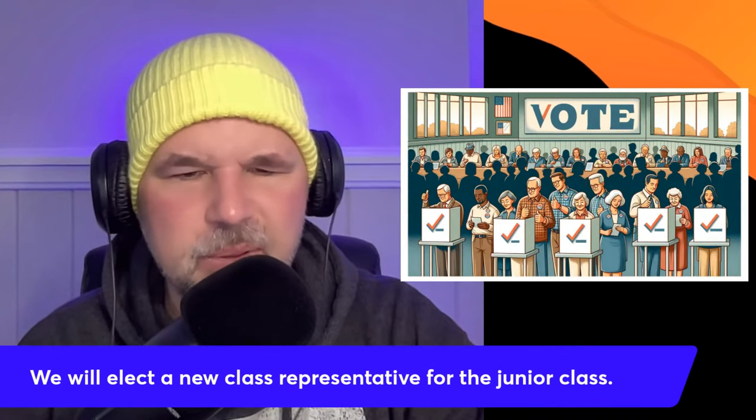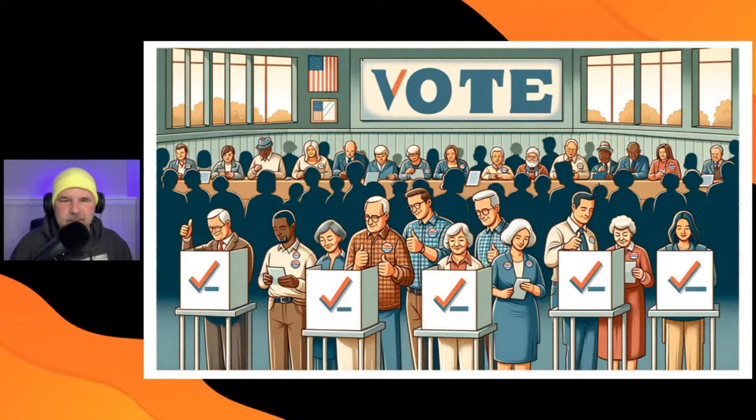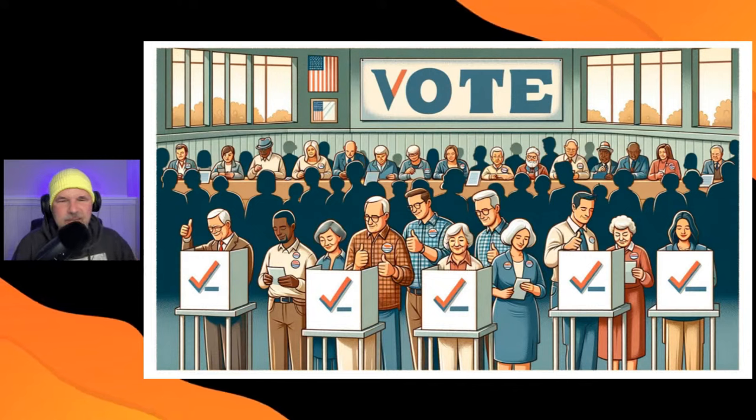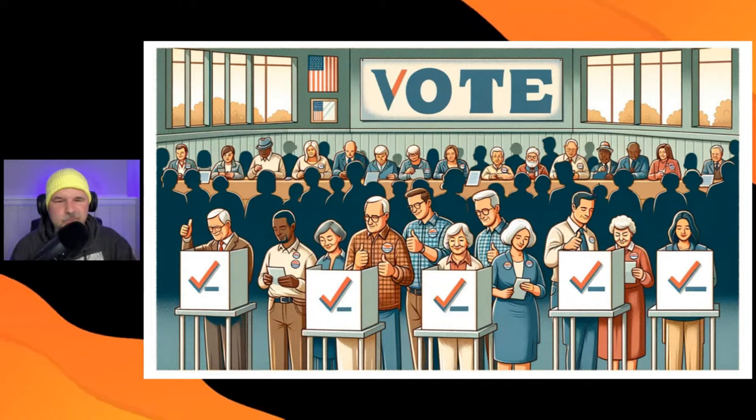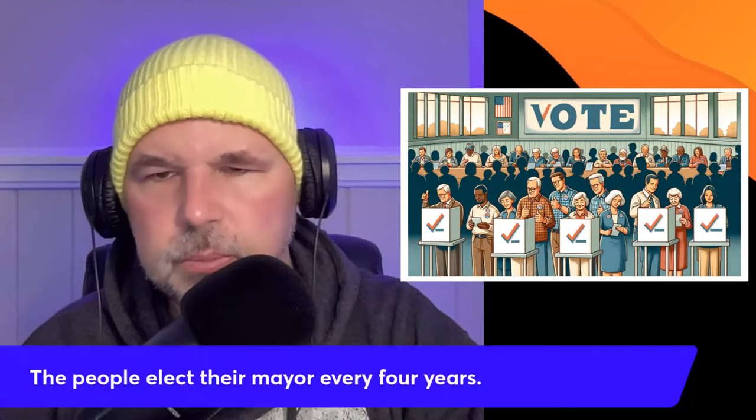Here's another picture of people voting — casting their vote. If you saw the English lesson I did on fishing, you'll know there's another way we use 'cast' as a verb. I should do a whole lesson on the word 'cast' because it can be a noun in a couple of different ways, and it can be a verb when you fish or when talking about elections. How about this sentence: 'The people elect their mayor every four years.'